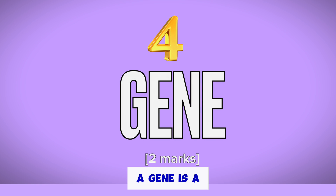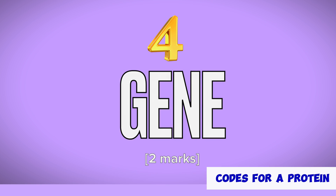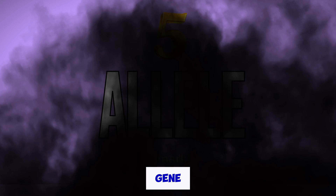Number 4: A gene is a length of DNA that codes for a protein. Number 5: An allele is a different form of a gene.